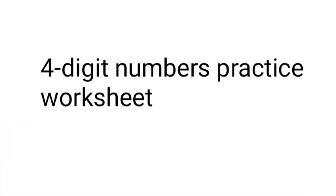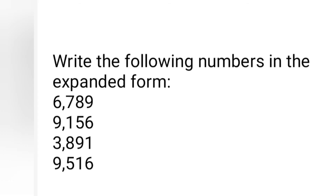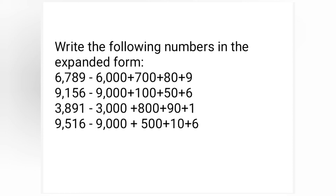Next, let us solve the worksheet of 4-digit numbers. Write the following numbers in expanded form. What is the expanded form of 6789? 6000 plus 700 plus 80 plus 9. What is the expanded form of 9156? 9000 plus 100 plus 50 plus 6. What is the expanded form of 9516? 9000 plus 500 plus 10 plus 6.